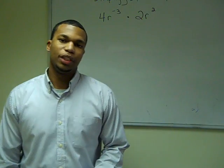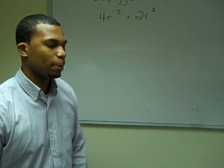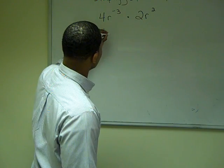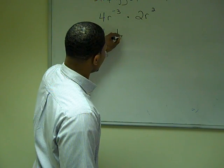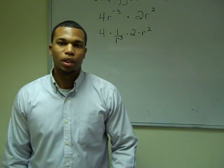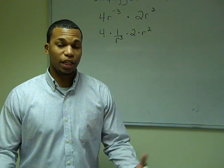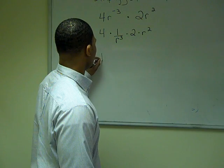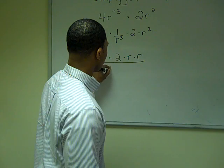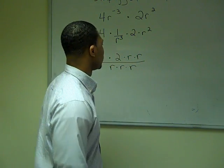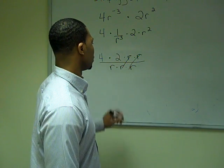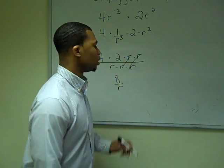Now I have four r to the negative third times two r squared. I'm going to rewrite this expression, making my negatives positive by moving r to the negative third to the denominator. Then I expand the notation to simplify. I can factor out some r's, and I'm left with eight over r.